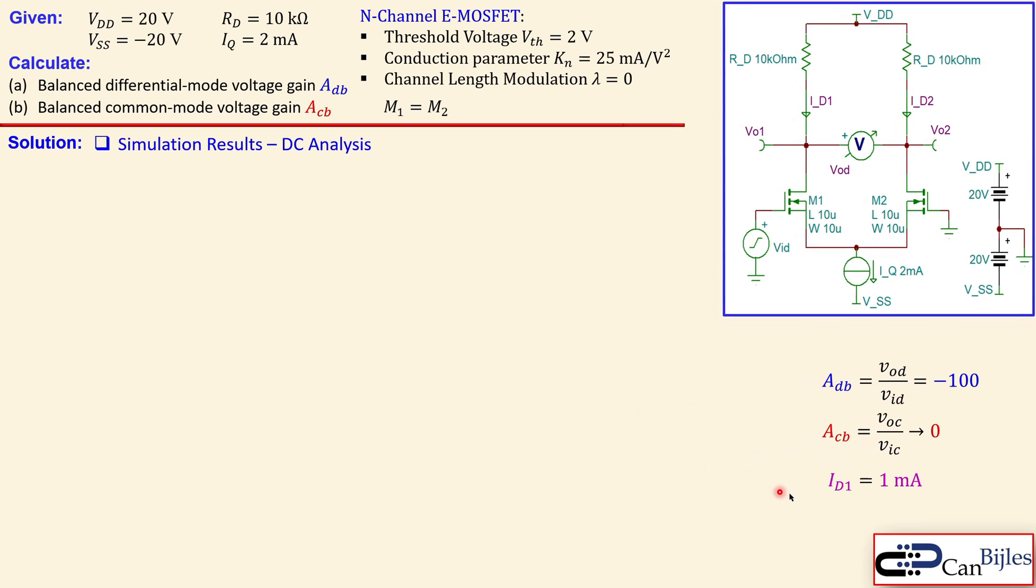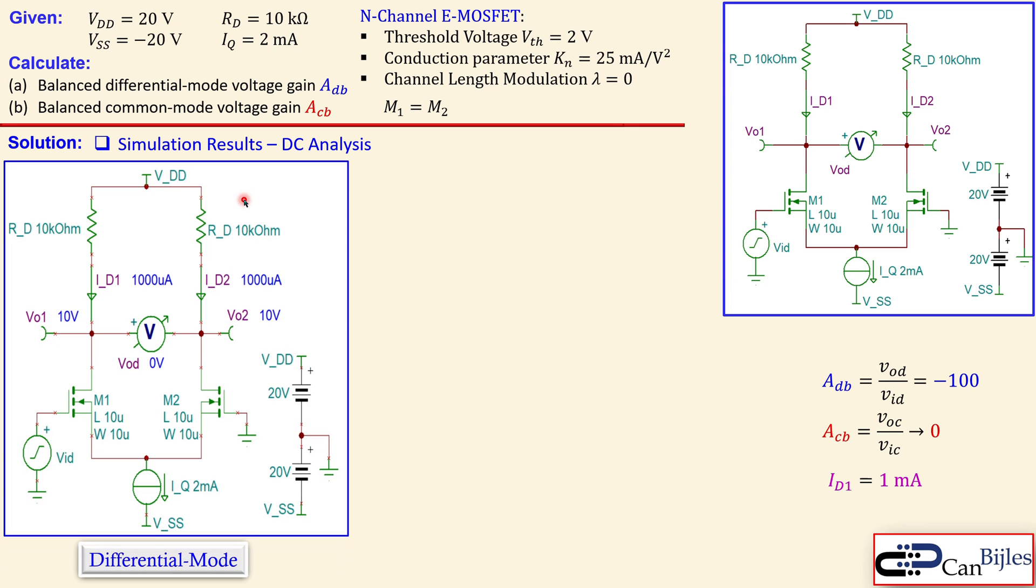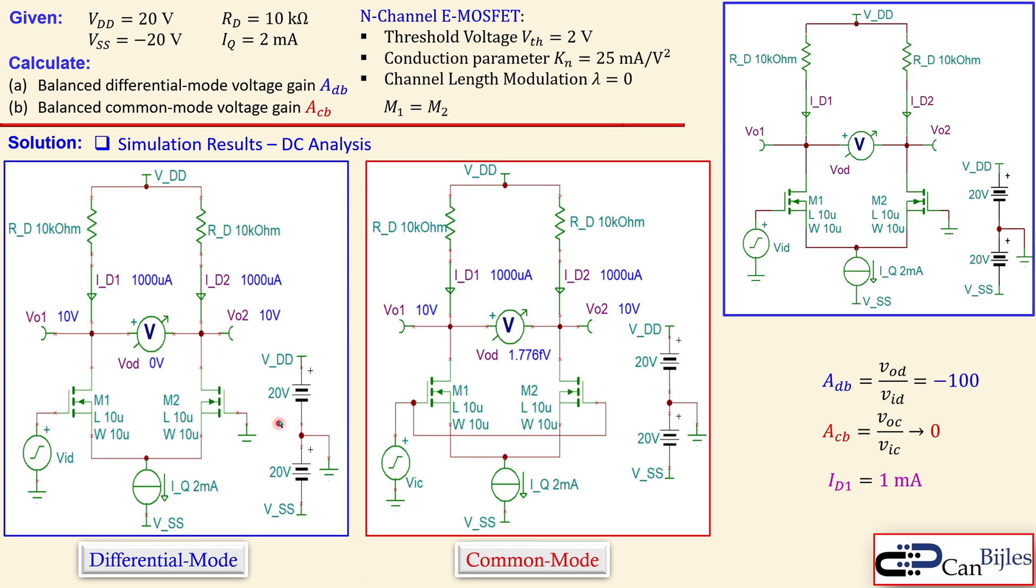Now bringing the results here, and also the drain current in DC, let's first look at the simulation result for the DC analysis. We have the left side for the differential mode, and right side for the common mode. What you see is the following: the ID1 and ID2 are each 1000 microamps or 1 milliamp, so they're exactly the same. You also see that the common mode operation is exactly the same.